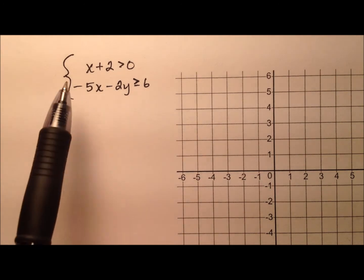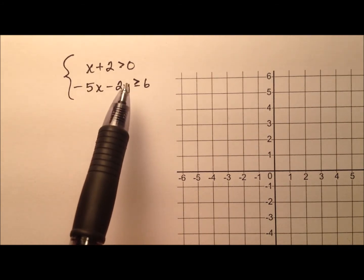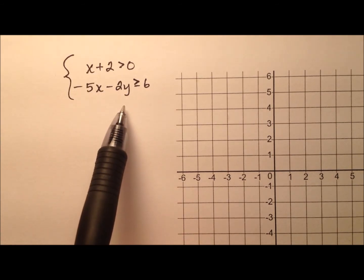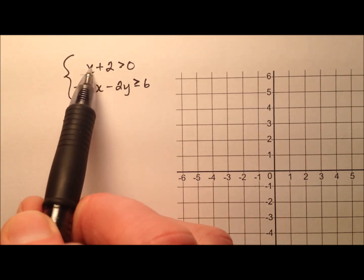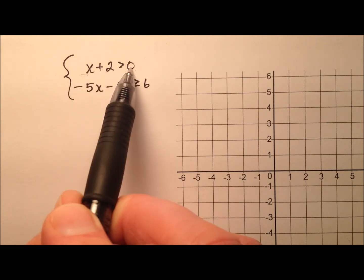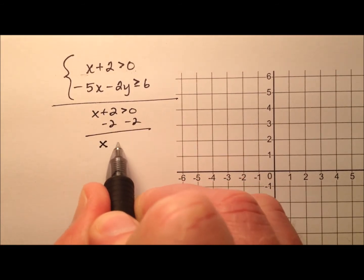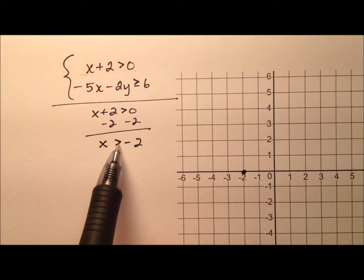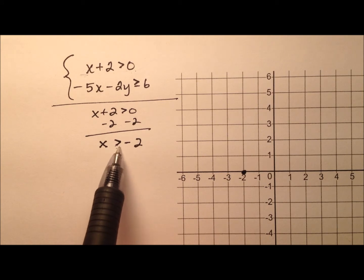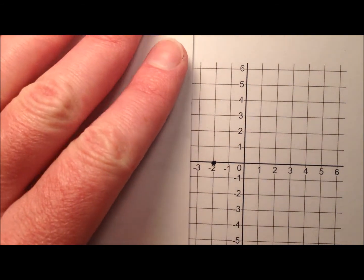In this second and final example, I have a new system of linear inequalities and I'm going to do the same thing — graph it and find the solution set. Neither one of these is in slope-intercept form already, so let's go ahead and put them both in slope-intercept form. I notice that I'm actually missing a y here — this is x plus 2 is greater than 0 — which means, without a y, this is just going to be a vertical line. Subtracting 2 from both sides gives me x is greater than negative 2. So it's a vertical line at x equals negative 2, and it's going to be dashed because x is greater than negative 2 but not equal to, so the boundary will not be included in the solution set. Let's go ahead and draw that line in — it's going to be dashed and vertical.